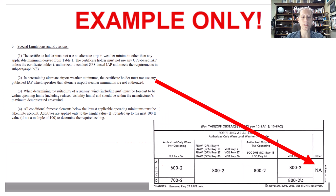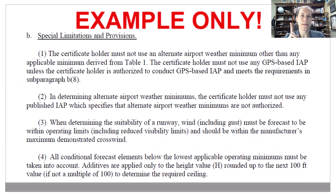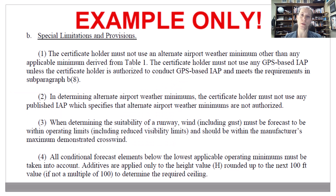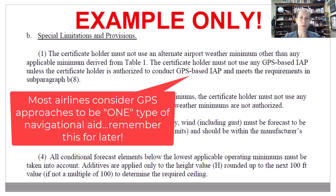The second point, note number one, says you cannot use GPS-based approaches to figure out your alternate minimums unless your airline, your certificate holder, has approval for GPS-based approaches. Many airlines can do GPS approaches, but you need to take that into account. Regarding GPS approaches, a GPS approach is considered one NAVAID, so remember that for later.